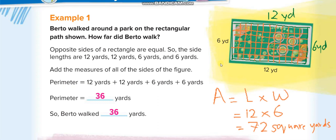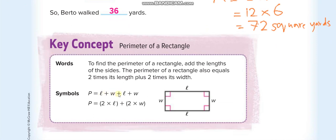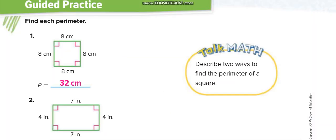So for perimeter, we add all the sides, because perimeter means the distance around the figure. For area, it's length times width — 12 times 6 is 72 — and we always write square yards because area means how many square units are inside. For a rectangle, you can also think of it as two lengths plus two widths, or 2 times length plus 2 times width, for the perimeter.